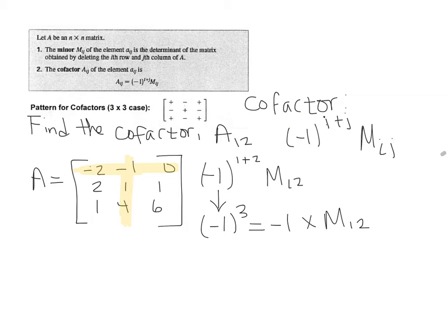2 times 6, which is 12. So we have 2 times 6 minus 1 times 1. So that's 12 minus 1, which is 11. So we bring that back up here, and we get negative 1 times 11, which is negative 11.